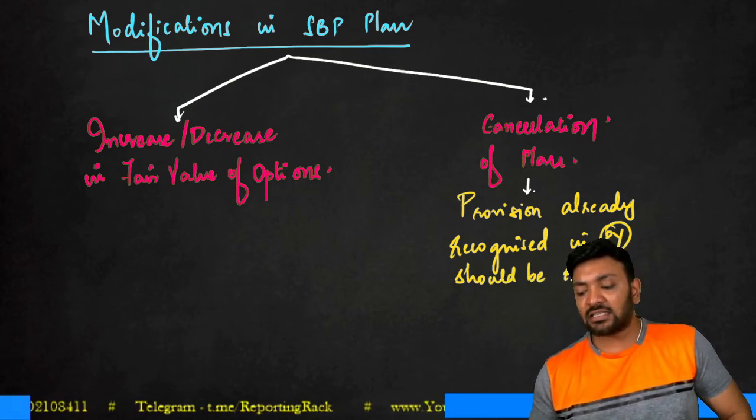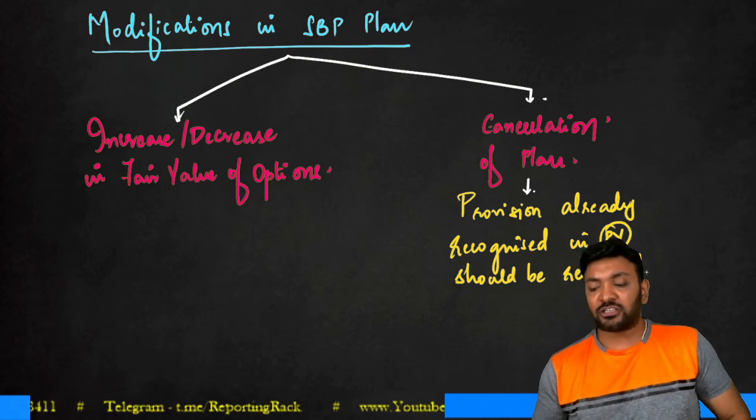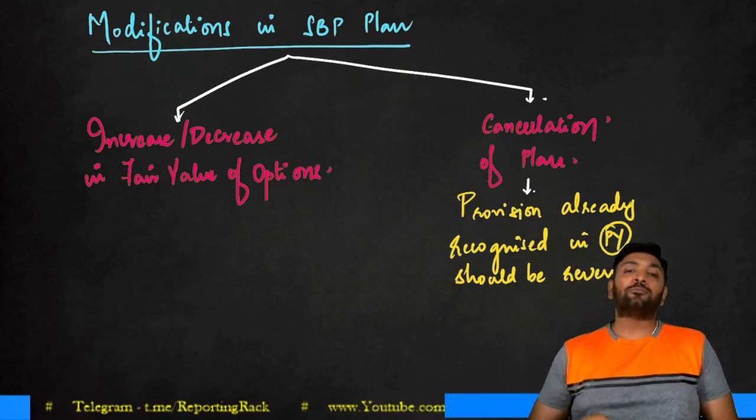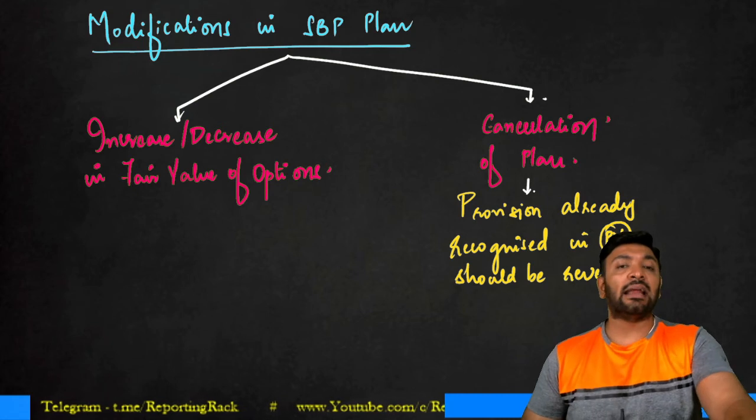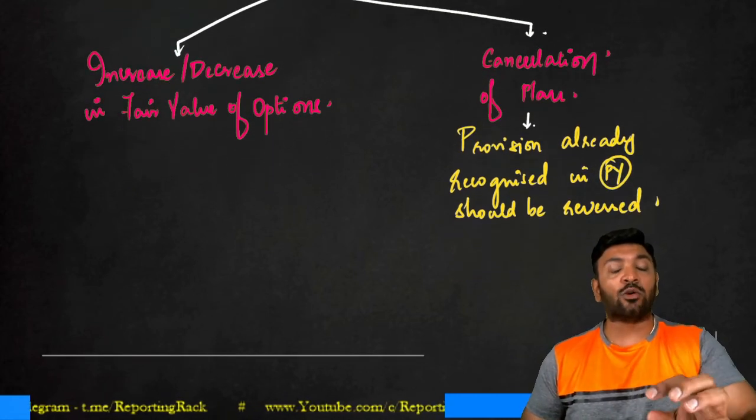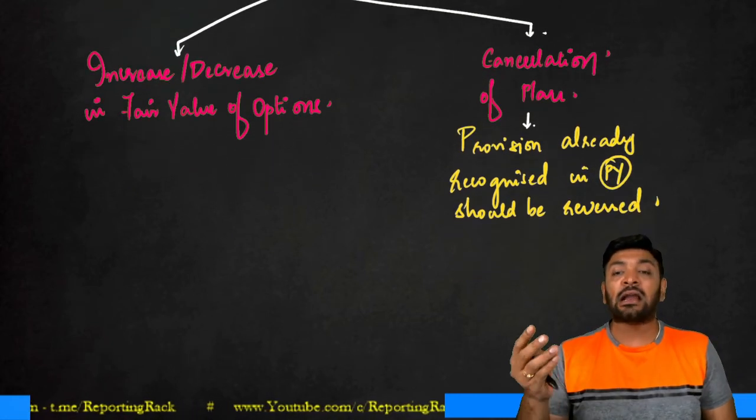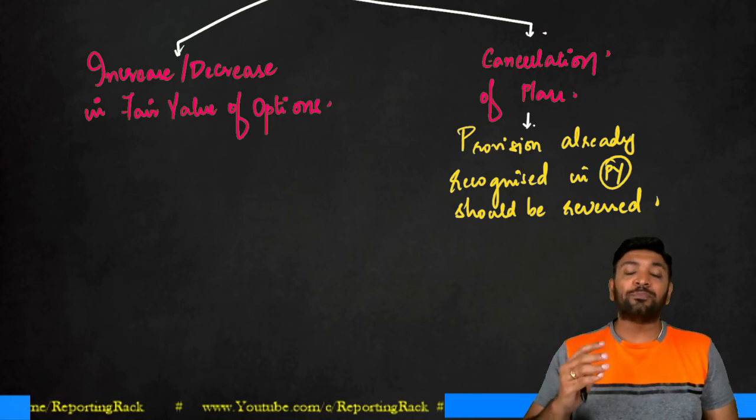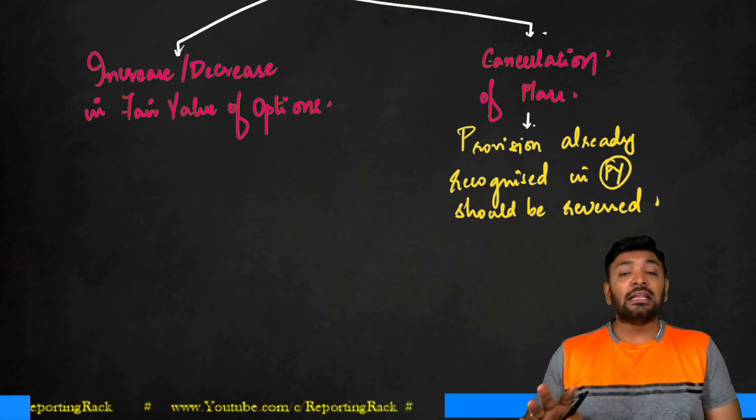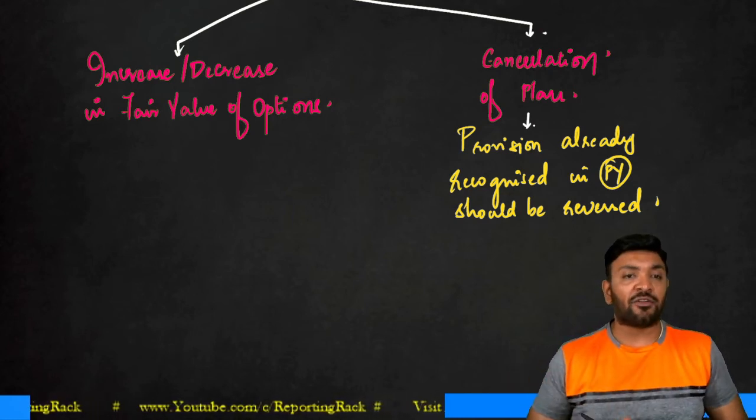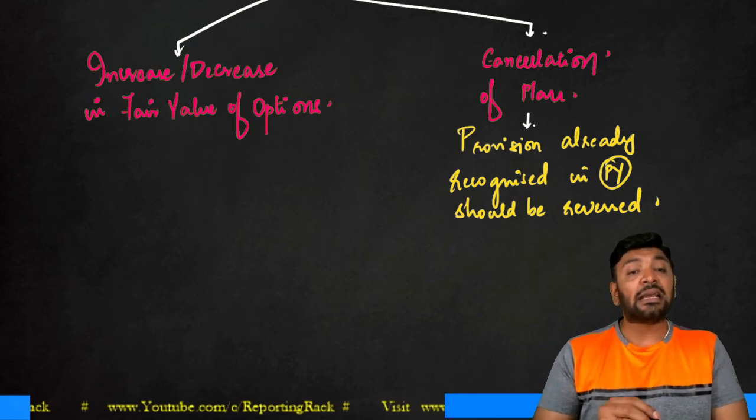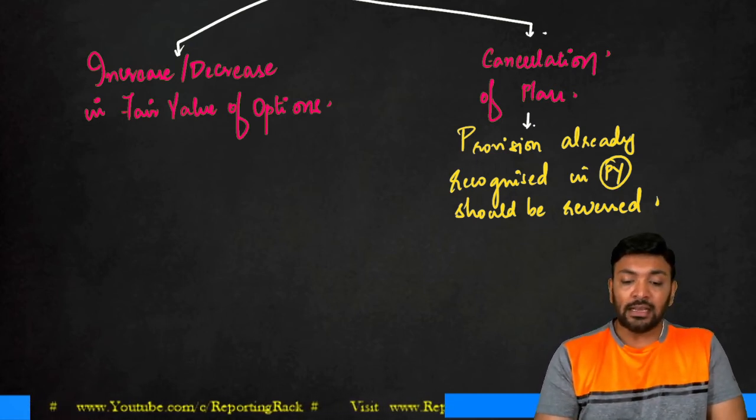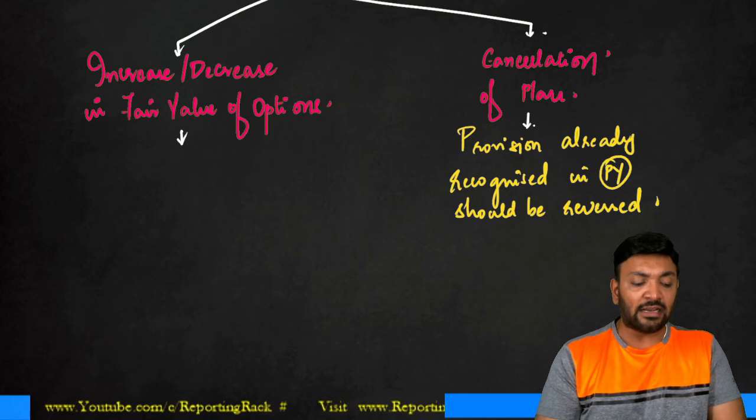That means as good as a lapse of options. So I'll write the entry as share-based payment equity or share-based payment liability account debit to your P&L or general reserve. This happens whenever there is a cancellation of a plan. Let's say I have an increase or decrease in fair value. In such case where I have an increase or decrease in fair value...